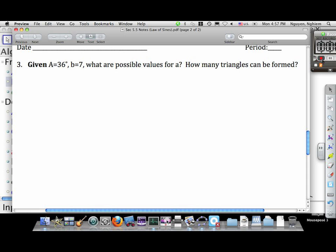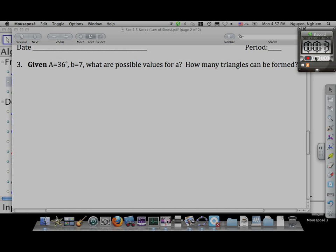Pre-calculus students, we have a question here continuing on our discussion of the law of sines. Given that A is 36 degrees, b is 7, what are the possible values for little a and how many triangles can be formed? We're given very little information here, just an angle and a side, and we're asked to see what are the restrictions on the other parts of this triangle. Before we get into answering the question, it's best just to do a little bit of an exploration here.